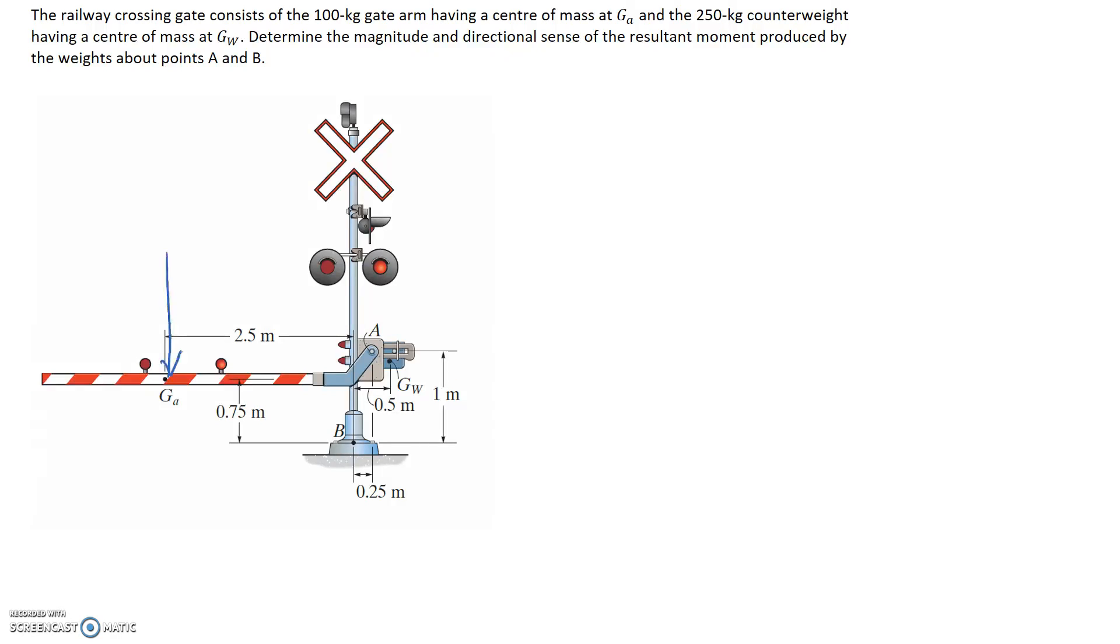We can say that the weight of this arm can act through its centre of gravity. We know that the weight is equal to the mass times gravity. So if it's 100, gravity is 9.8, we're going to have a force of 980 newtons acting down through the centre there.